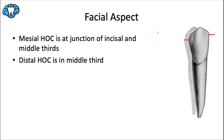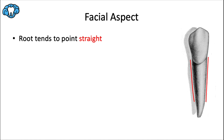From the facial aspect, the mesial height of contour is at the junction of the incisal and middle thirds, and the distal height of contour is in the middle third. As opposed to the maxillary canine and every other tooth discussed so far, the root apex is typically very straight — about 45% of the time it's straight, 29% it curves to the mesial, and 26% of the time it curves to the distal.